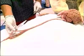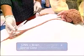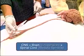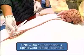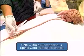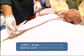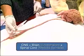The neuraxis includes two parts: the brain, which in Latin is called the encephalon, and the second part is the spinal cord, or medulla spinalis.